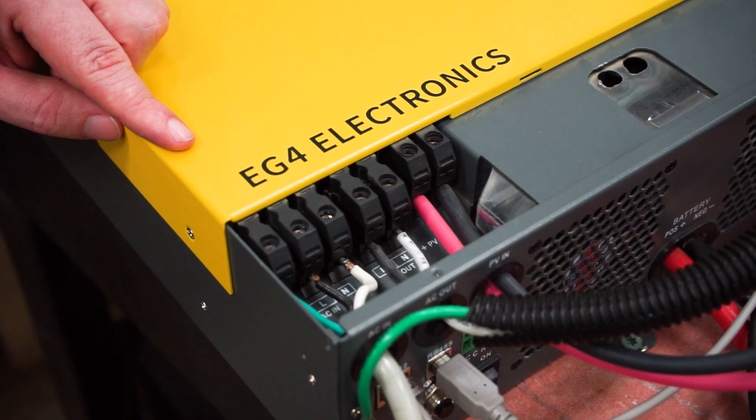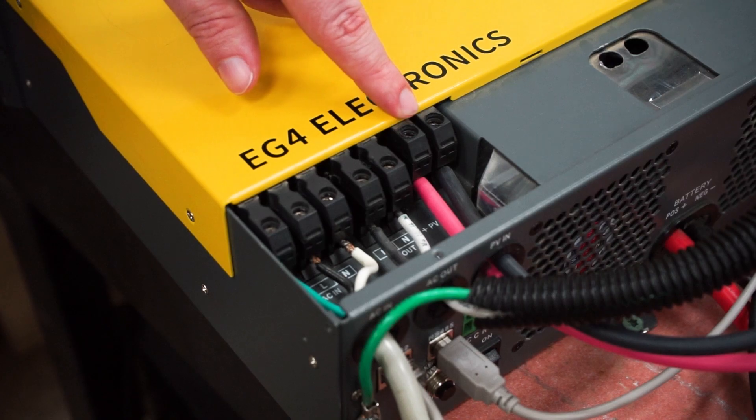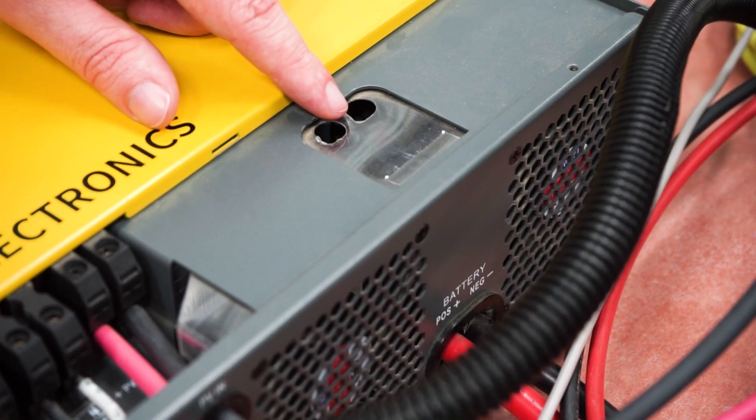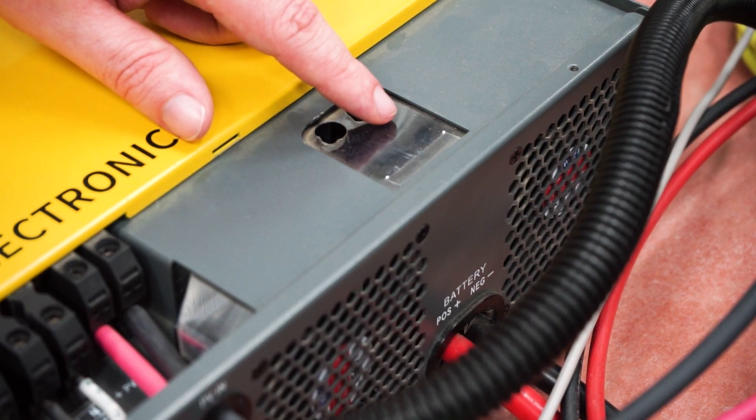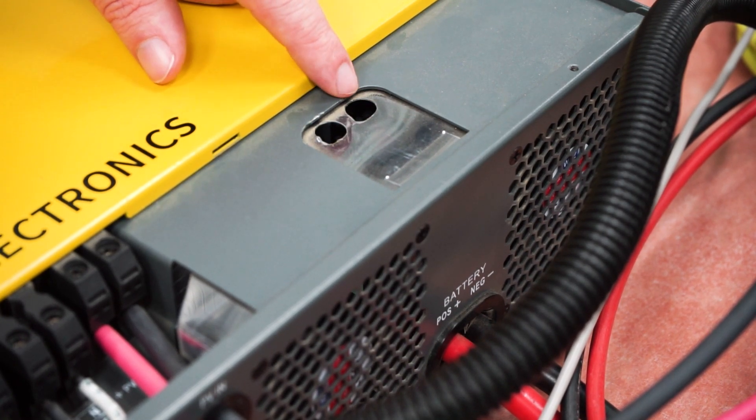From the top you've got your AC in, your AC out, as well as your PV input, and then to the right you have a section for the battery to be connected as well with a couple holes to screw that in.